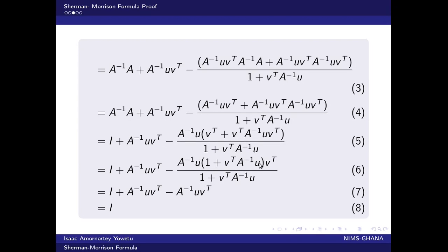Once we obtain this expression, we can cancel the numerator with the denominator. All these terms then give us this expression here — this one is negative and this one is positive — so they cancel out giving us our identity matrix.